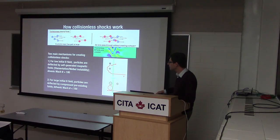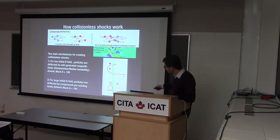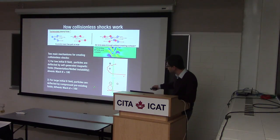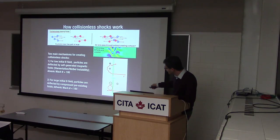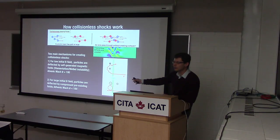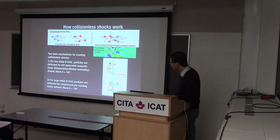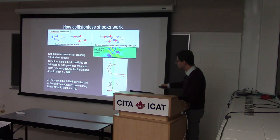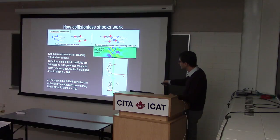If magnetic fields are larger than some threshold, the orbit of the particle in front of the shock looks like a straight line. After the shock, the magnetic field goes up, the E×B drift changes character, and particles start to gyrate in this E×B drift. On average, this slows down the bulk velocity of the flow.